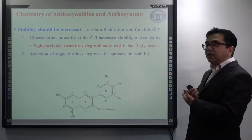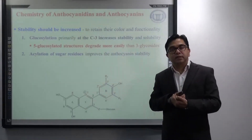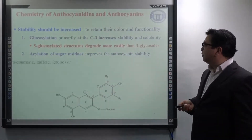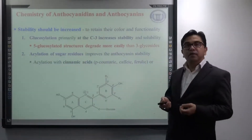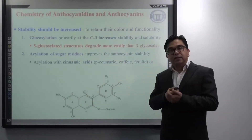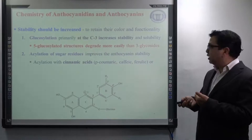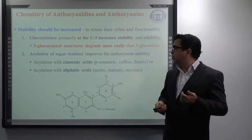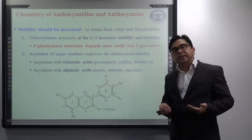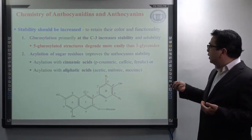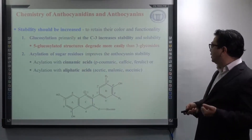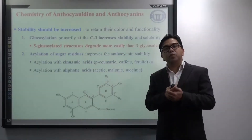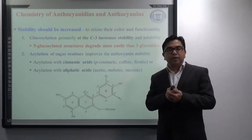Secondly, stability can also be increased by acylation of sugar moieties or sugar residues. This acylation can be done with cinnamic acids like p-coumaric acid, caffeic acid, ferulic acid, and acylation of sugar moieties can also be done with aliphatic acids like acetic acid, malonic acid, and succinic acid. These are the various ways to improve the stability of anthocyanidins.